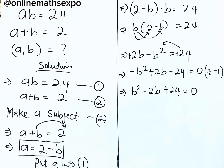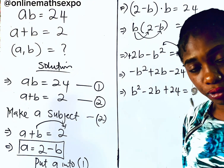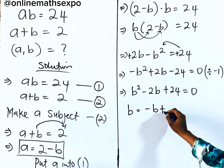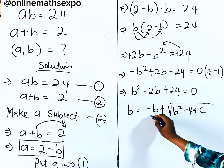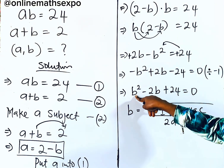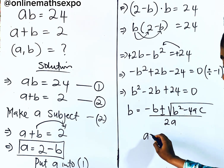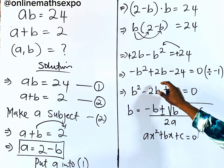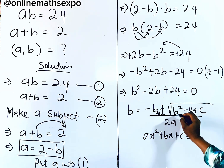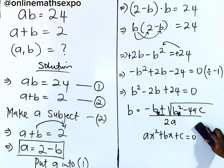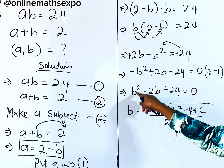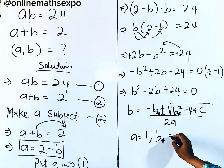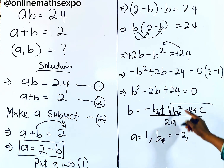Now let's solve this using the quadratic formula. The formula is b = (−b* ± √(b*² − 4ac)) / 2a. Since our variable is b but b also appears in the formula, we place an asterisk on the formula's b to differentiate it. Our 'a' is the coefficient of b², which is 1. Our 'b*' is the coefficient of b, which is −2. And c = 24.